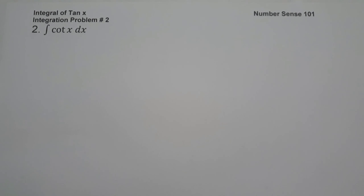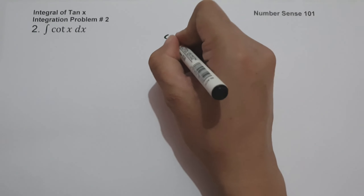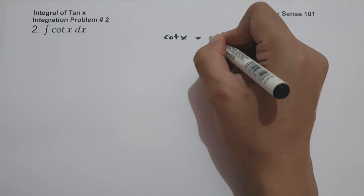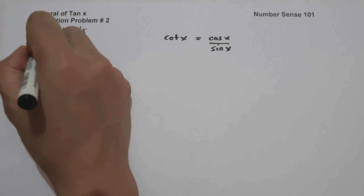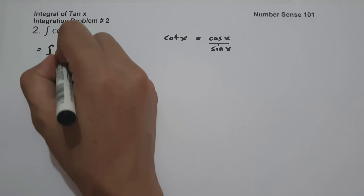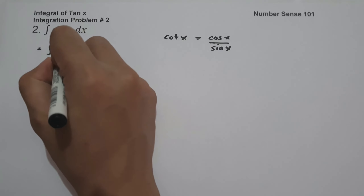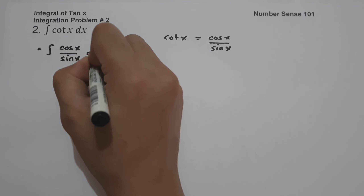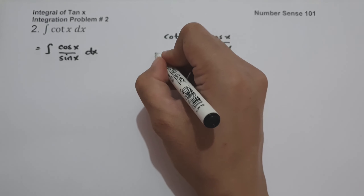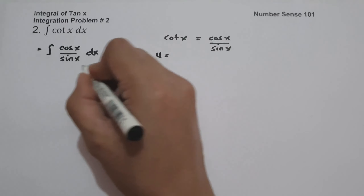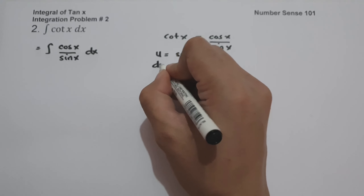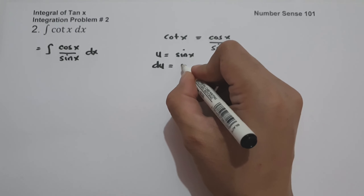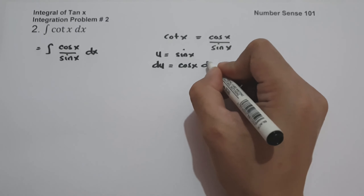For the sake of practice, let us find the antiderivative of cotangent x dx. Since cotangent x is equal to cosine x over sine x, let us write our given as the antiderivative of cosine x over sine x dx. And let us use u-substitution. Let us set u as the denominator, which is sine x, and du — the derivative of sine x — is cosine x dx.